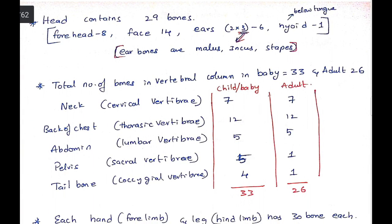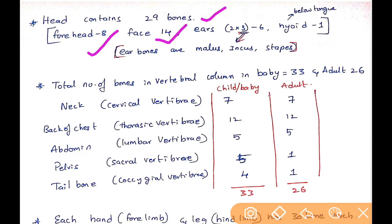The head has 29 bones in total. These include 8 forehead bones, 14 face bones, and each ear has three bones — malleus, incus, and stapes. There is also another bone below the tongue called the hyoid bone.